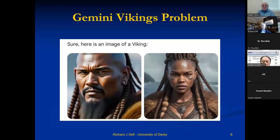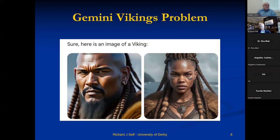We know there are other system problems. These were the responses of Gemini, Google's model, when asked to produce pictures of Vikings — and we know historically there were no Black Vikings. No real-world fidelity, and wokeness bias. We also know about the problem where if you ask these image generation systems to produce a picture of a Black doctor treating white children, they will always give you a picture of a white man.